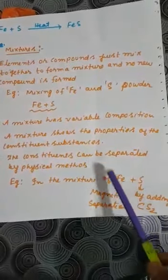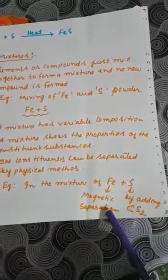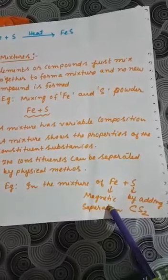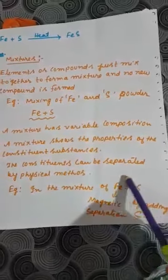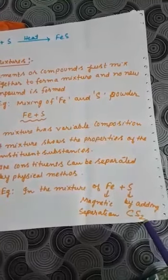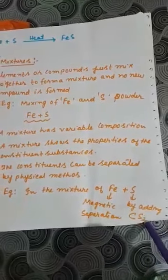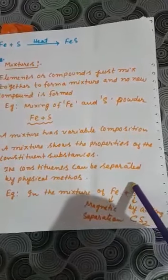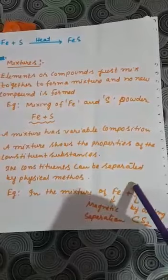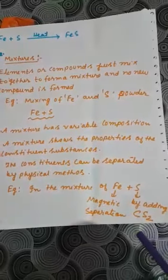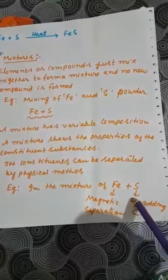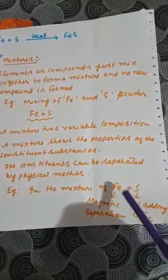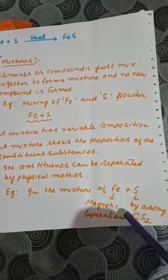For example, if we make a mixture of iron and sulfur, we can separate iron using a magnet — that is called magnetic separation. To separate sulfur, we can add carbon disulfide solution, because sulfur dissolves in carbon disulfide solution, and in this way we can separate sulfur and iron from the mixture.